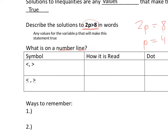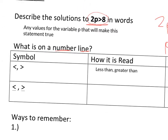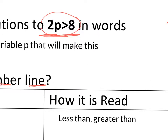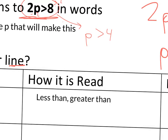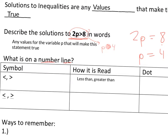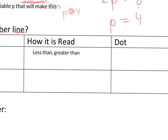Here are the four different inequality symbols. For less than or greater than — like P is greater than 4 — we aren't including that boundary number. All numbers more than 4 are solutions, but 4 itself is not. I'm including all numbers greater than 4, but not 4 itself.